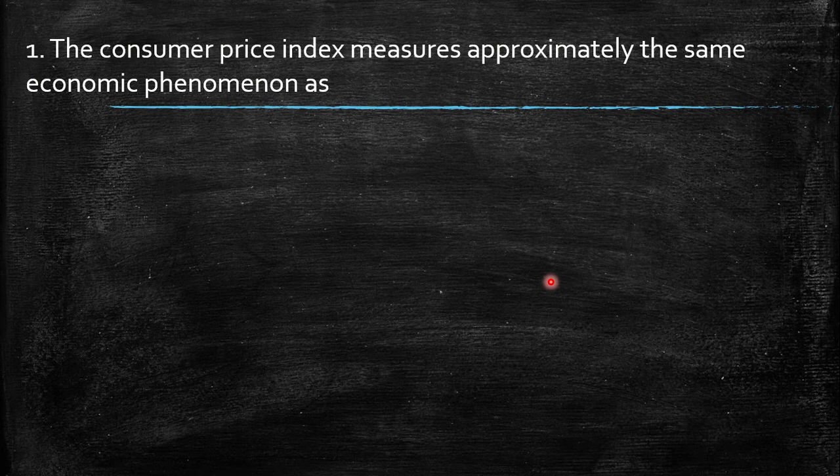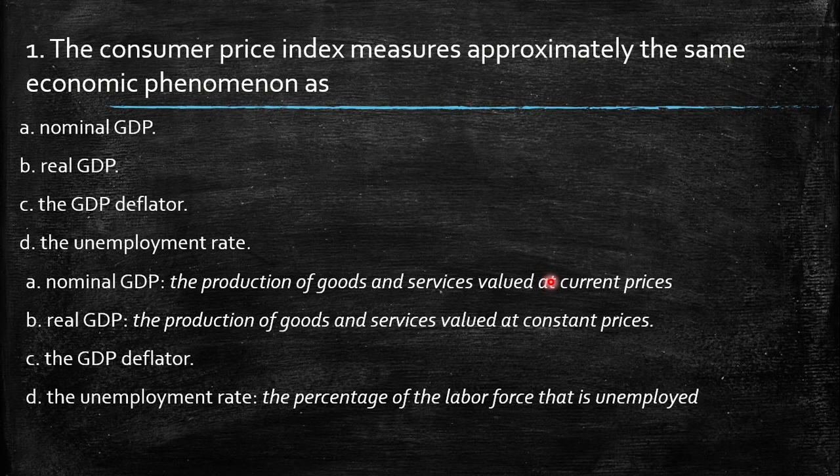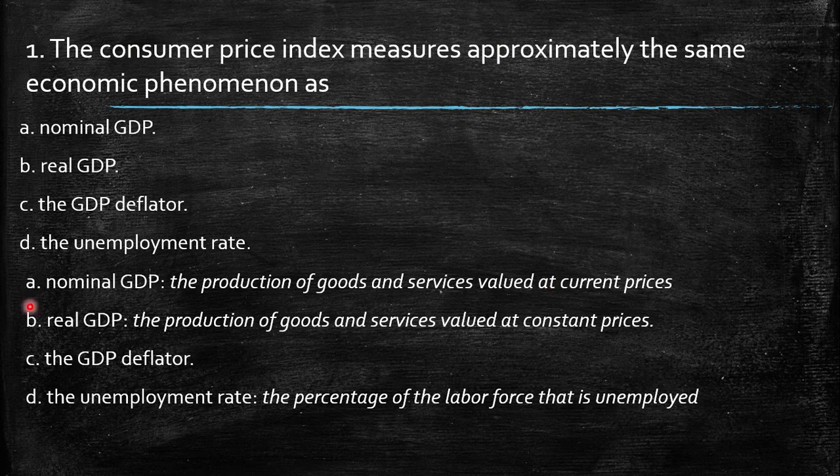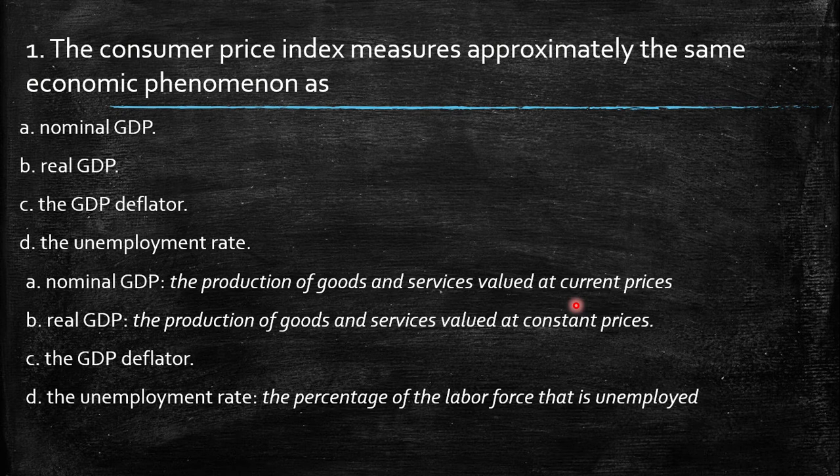the same economic phenomenon as nominal GDP, real GDP, the GDP deflator, or the unemployment rate. So first, let's go through all the definitions. Remember, the nominal GDP is the production of goods and services valued at specific current prices. So if you're taking, for example, nominal GDP of 2019, you're going to value all the goods and services at the price of 2018.